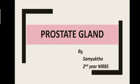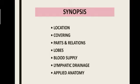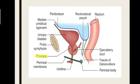This is an important essay question for your university exam, and the clinical anatomy of the prostate is very important since it is the most common case discussion in your surgery postings. So I want you all to listen to the class till the end. Here is the synopsis: first we will look at the location of the prostate gland, then its coverings, parts and relations, lobes, blood supply, lymphatic drainage, and finally applied anatomy.